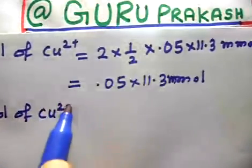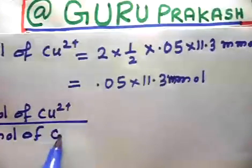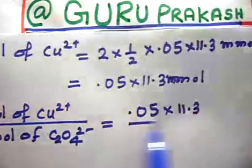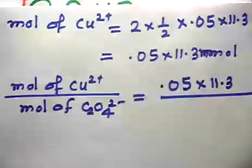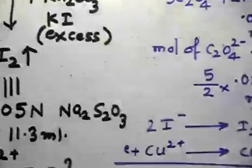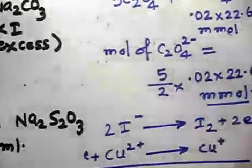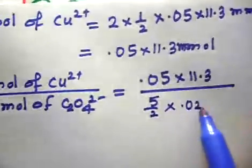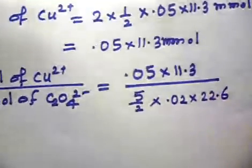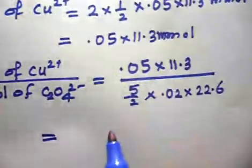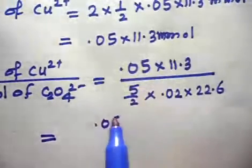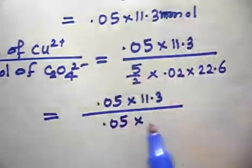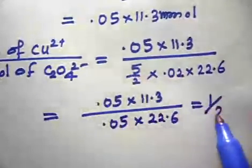The molar ratio of Cu²⁺ to C₂O₄²⁻: moles of Cu²⁺ = 0.05 × 11.3 millimoles, and moles of C₂O₄²⁻ = (5/2) × 0.02 × 22.6 millimoles. Simplifying: the 2 cancels, leaving 0.05 × 11.3 divided by 0.05 × 22.6, which gives 1/2. So the molar ratio of Cu²⁺ to C₂O₄²⁻ is 1:2.